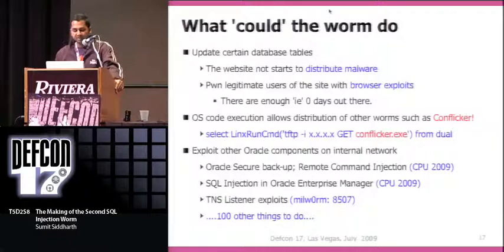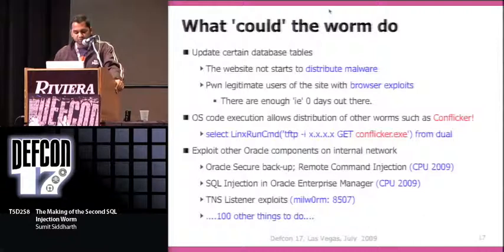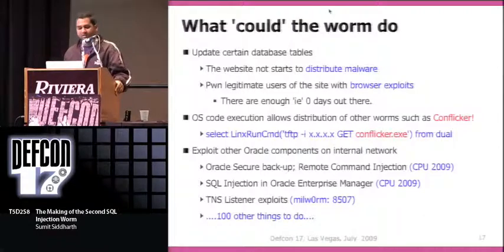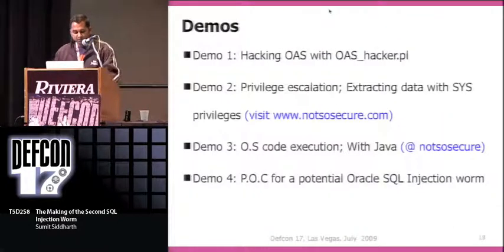What could the worm do from here? We've already seen OS code execution on the server. We could do what the MS SQL worm did — update the database and hack end users. If you can execute code, you could do something like a TFTP get of Conficker and infect the internal network. There is also Oracle Secure Backup remote code execution — you send one URL on the internal network and get a reverse shell back, and there's even a Metasploit module for it. Additionally, SQL injection in Oracle Enterprise Manager and TNS listener exploits are available. There are so many things a worm could do.